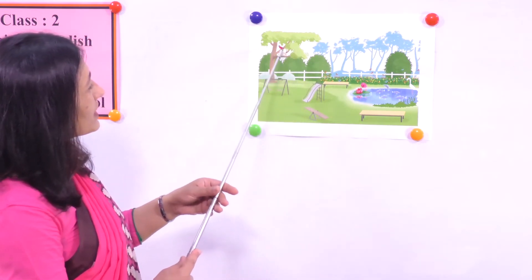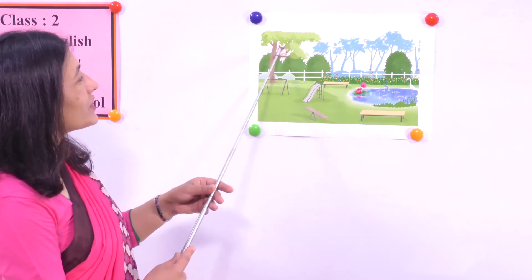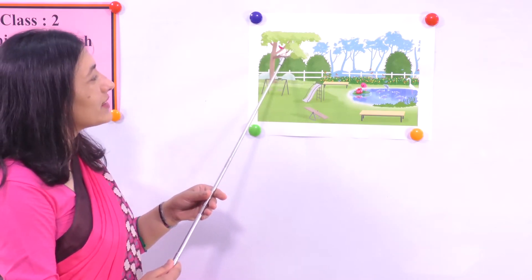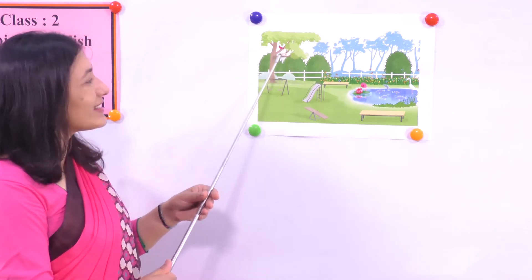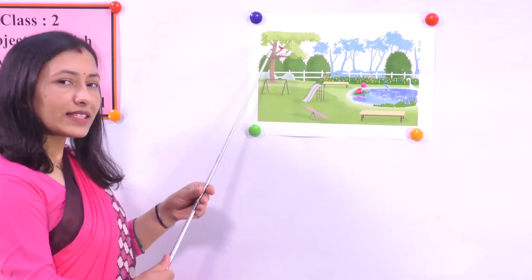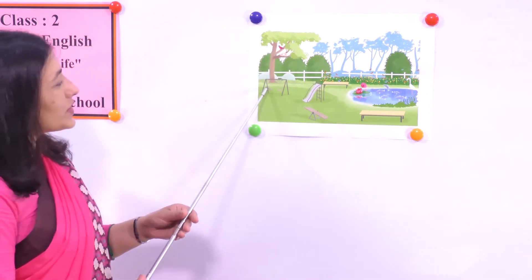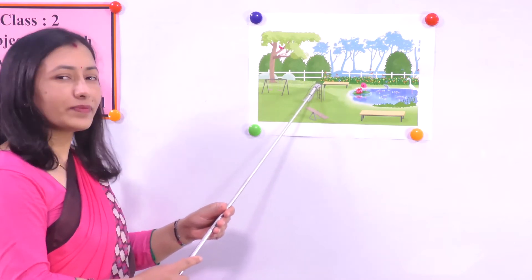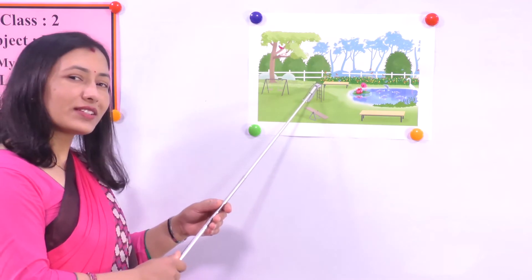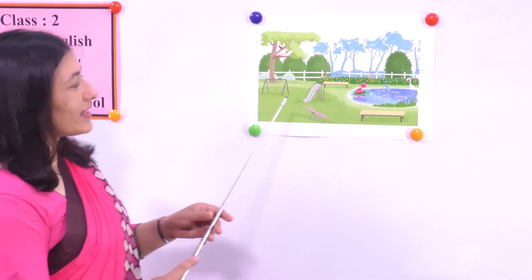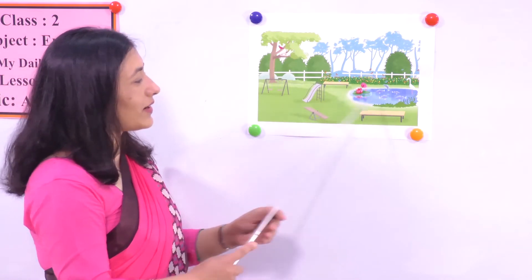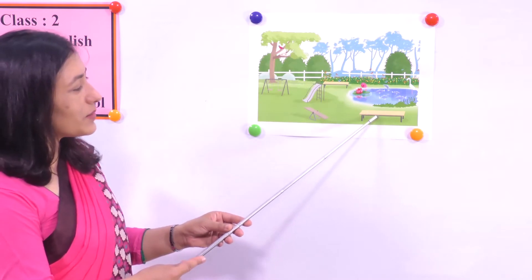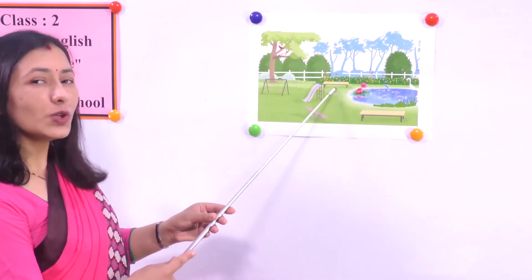There are so many other things. What is sitting on the tree? Good - bird. And what do you see here, just below the bird? What is it? Good - nest! This is the nest of a bird, that is the home of the bird. And what do you see here? What is it? Good - swing. And what do you call it? Good - slide. And what are they? This one and this one - what are they? Good - benches. There is a bench and there is also a bench, so two benches.